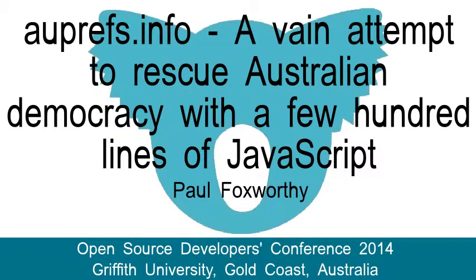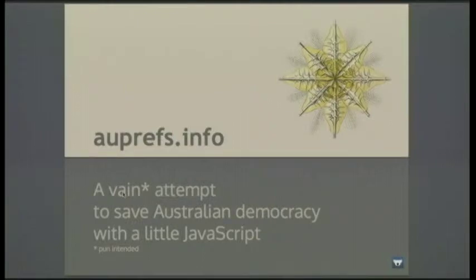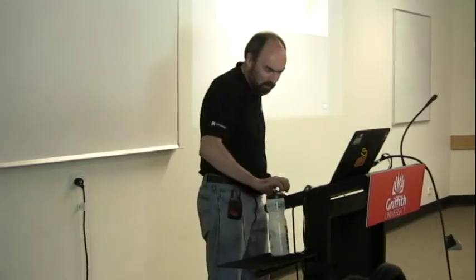Good afternoon. I'm Paul Foxworthy, from Melbourne. We're talking about the intersection between technology and politics. My little project is a website, auprefs.info — a vain pun intended attempt to save, or at least maybe improve, Australian democracy with a little JavaScript.